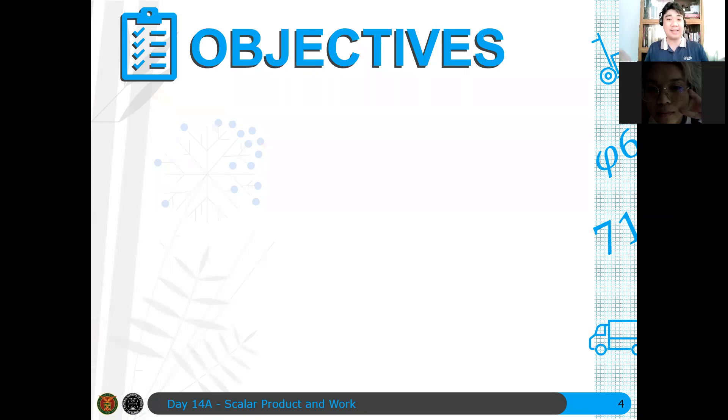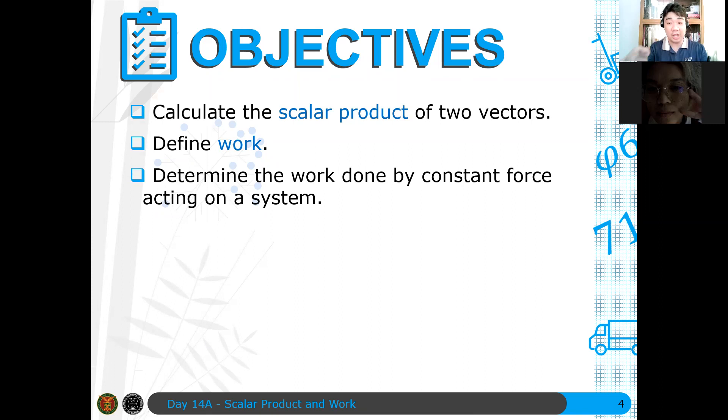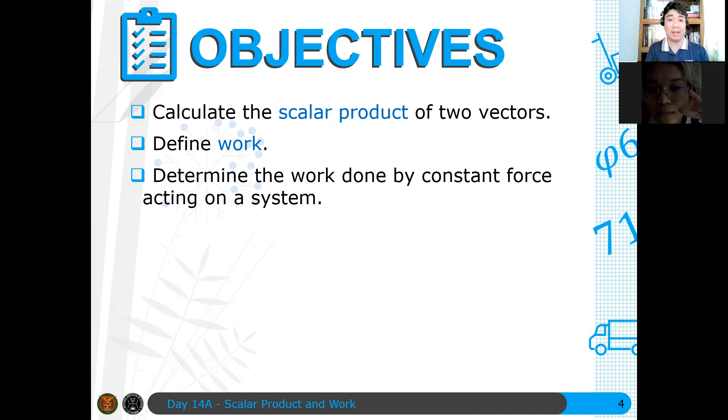Here are the objectives of this discussion. At the end of this part one of the lectures, or part A of this lecture, we should have known how to calculate the scalar product or the dot product of two vectors. We define work, and then we determine the work done by a constant force acting on the system. For example, if you have different forces, how do you calculate the work of that system of forces? I will start the discussion after I define the dot product.